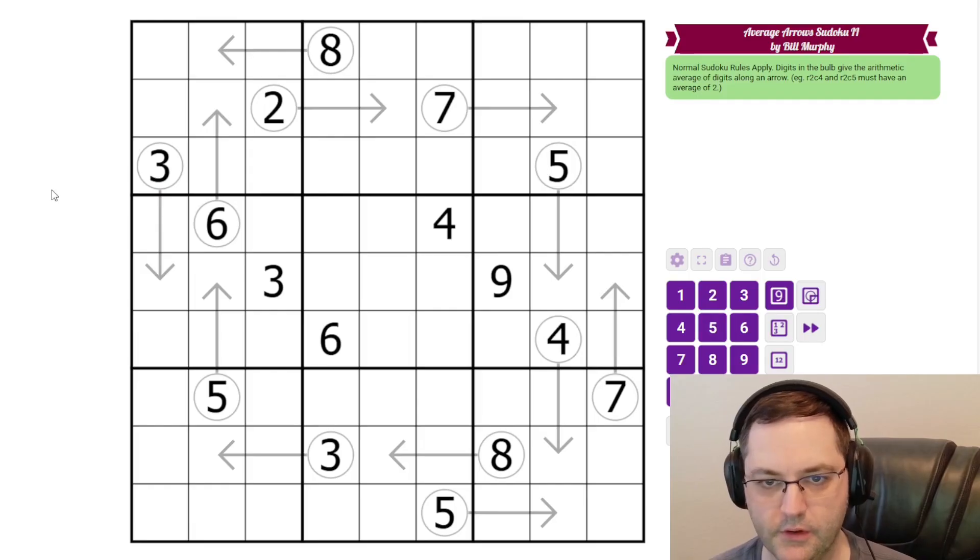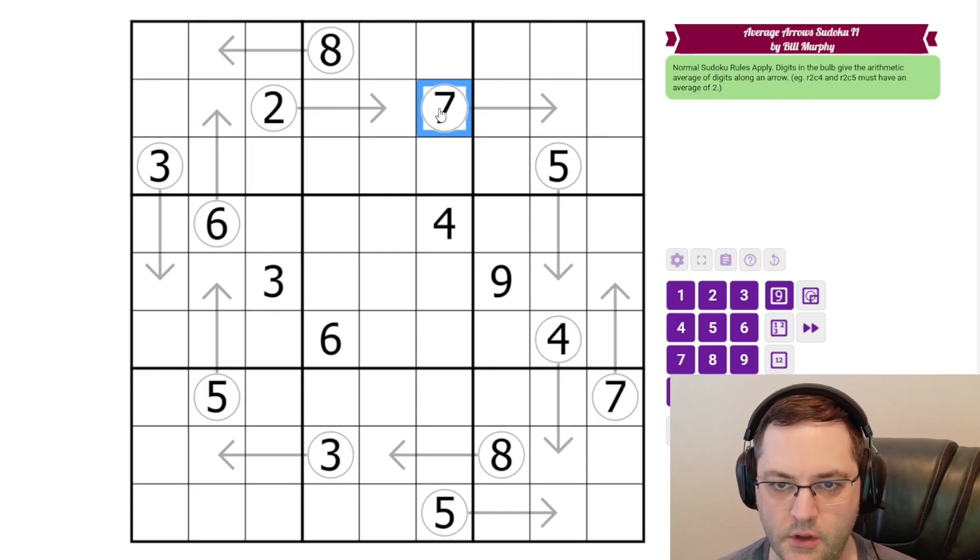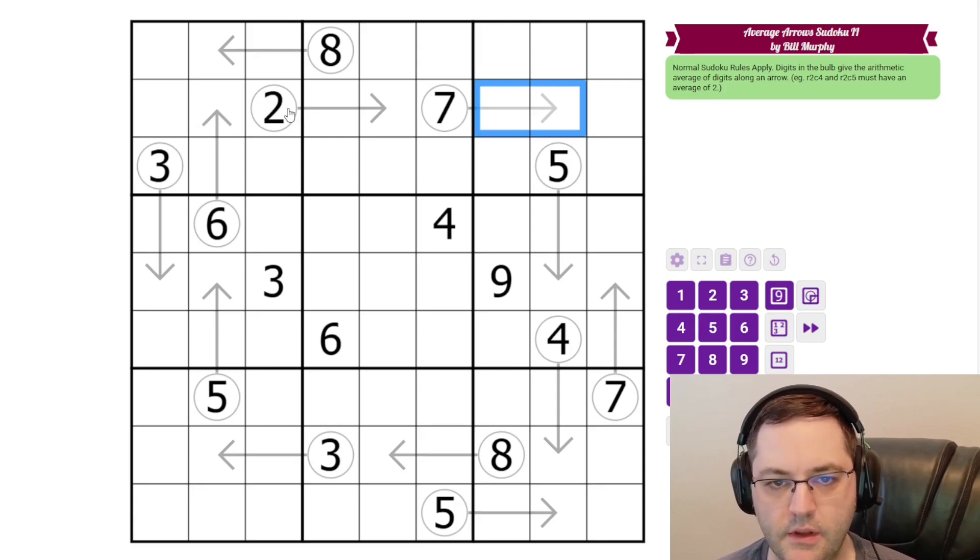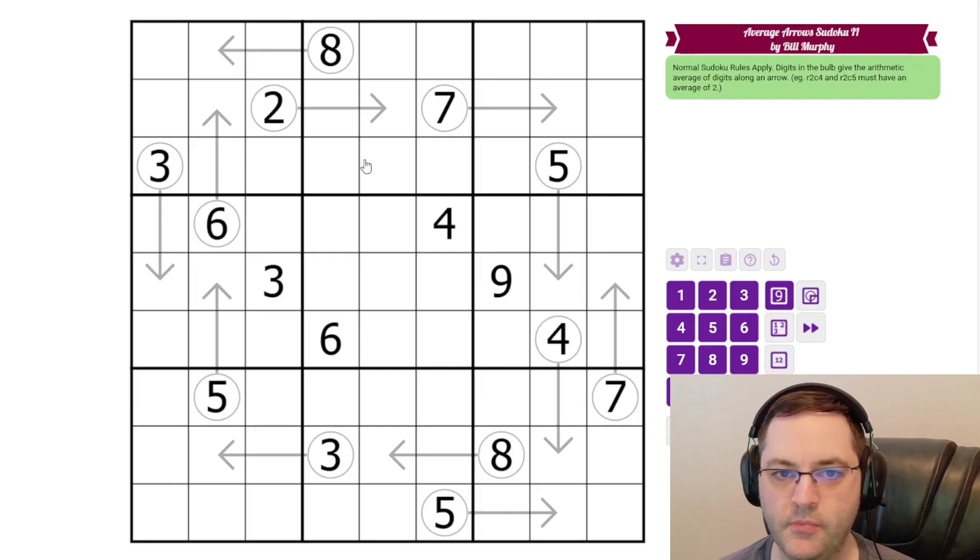Additionally, we have some arrows in the grid. And whereas normal arrows would be telling us, for example, there's a seven in the circle, so the sum of the digits on the arrow is seven. In this puzzle, the digit in the circle is the average of the digits on the arrow. And all of these are two cells, which helps. What also helps is Bill has given us the circle digits. And one thing to keep in mind for Average Arrows, if we know the length and we know the average, then we know the sum. So that can be helpful.